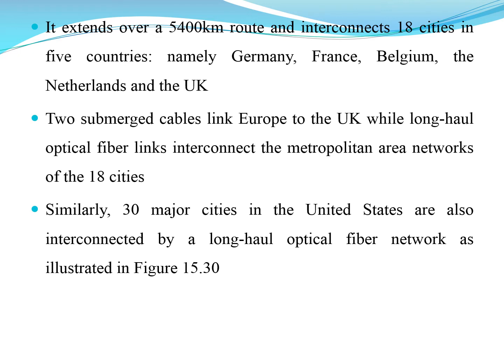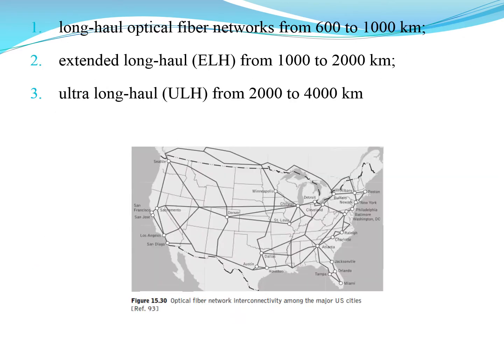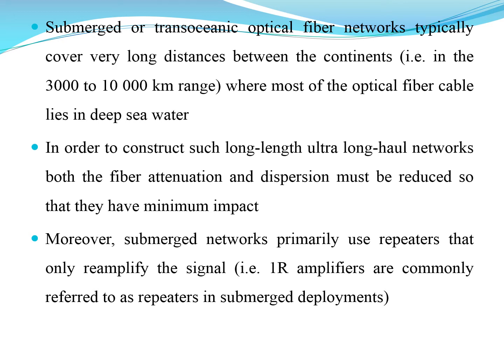We have metropolitan area networks which are connected between several cities. Long-haul optical networks have a range of 600 to 1,000 kilometers. Extended long-haul networks, referred to as ELX, range from 1,000 to 2,000 kilometers. Data rates include 2.5 Gbps over 64 channels, 10 Gbps over 40 channels, and 160 Gbps over 40 channels. These are used as submerged fiber networks between continents over thousands of kilometers.